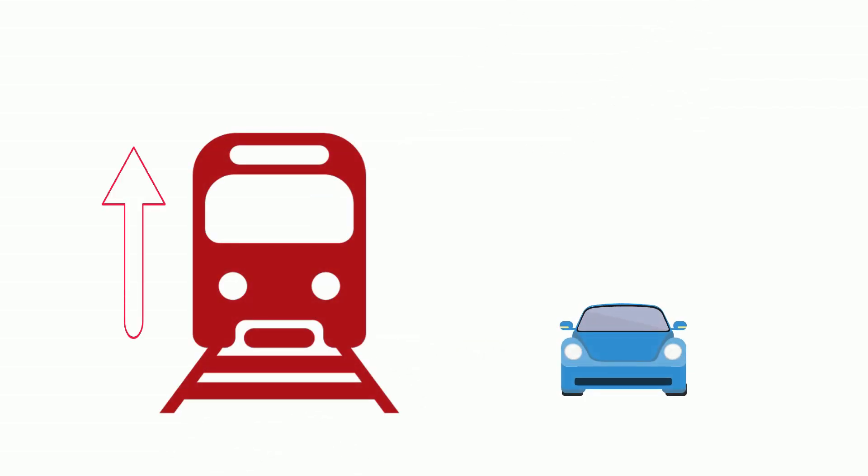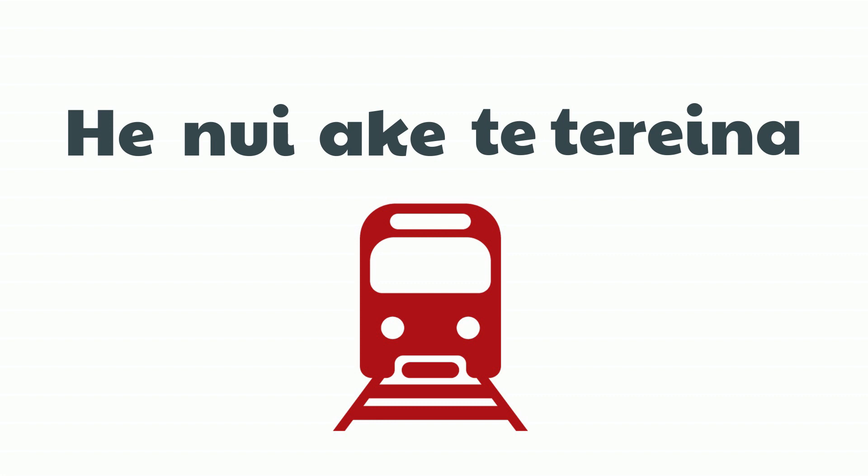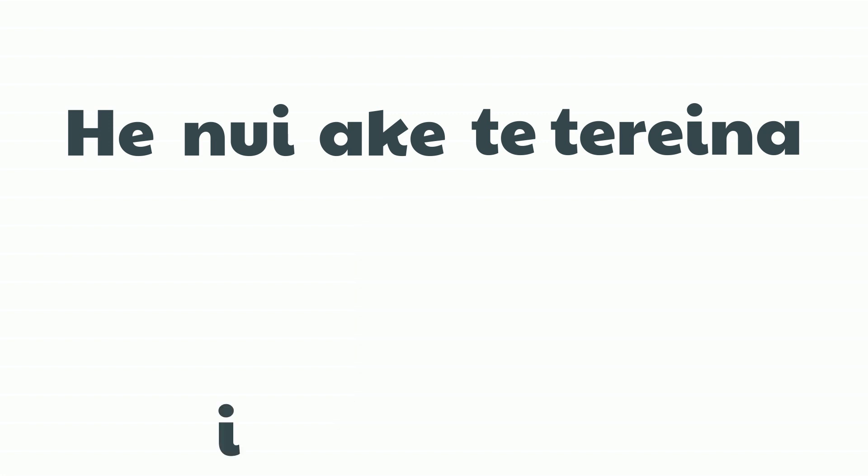If I want to say, 'The train is bigger than the car,' we start the sentence with 'He.' Then we say how the thing is different. Nui means big. Nui ake means bigger. Then we put the thing that's bigger — in this case, te terreina. To indicate what it is bigger than, we put the word i.